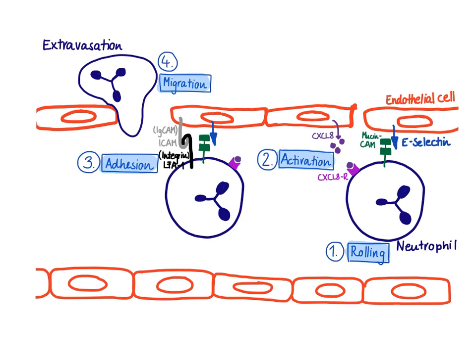In this video, I want to talk about the process of extravasation. This refers to the movement of white blood cells from the capillaries into the tissue surrounding them. The first example I want to discuss is a neutrophil that wants to leave the bloodstream to get to the site of infection.